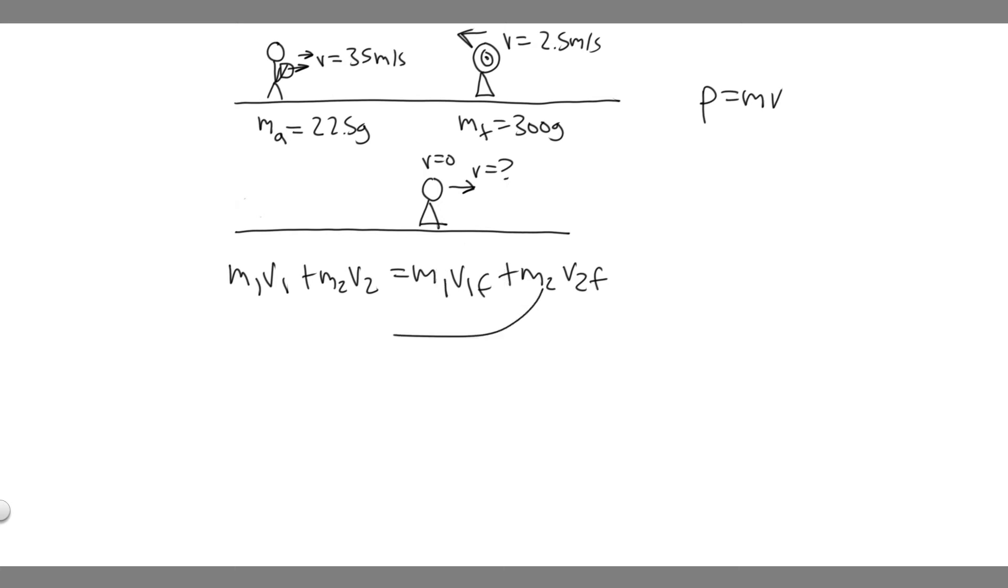Basically you want to find this and let's just plug in the rest. So m1 is going to stay constant, the mass of the arrow which is 22.5 grams, so 0.0225 kilograms because you need this to be in kilograms when you solve.